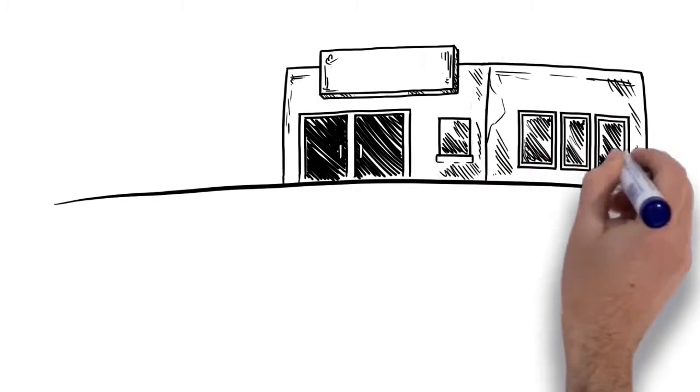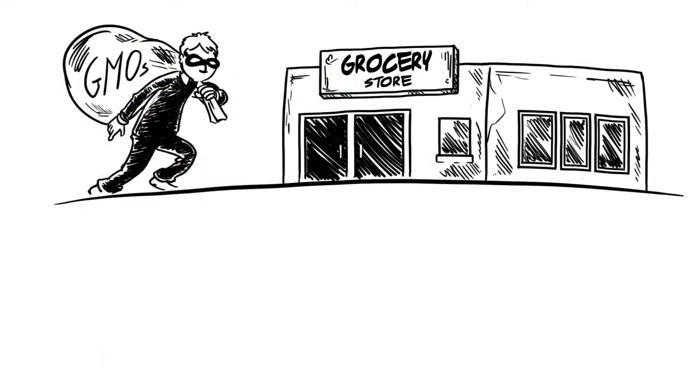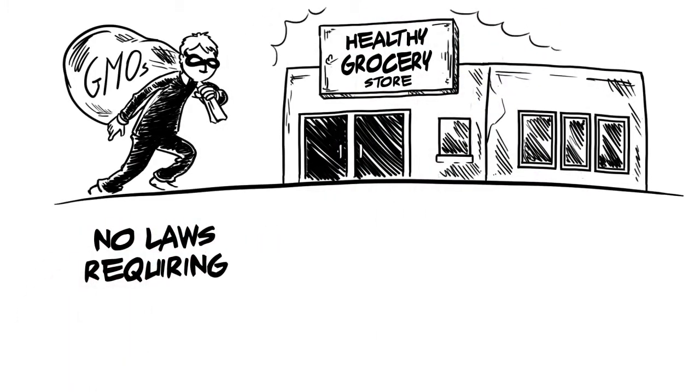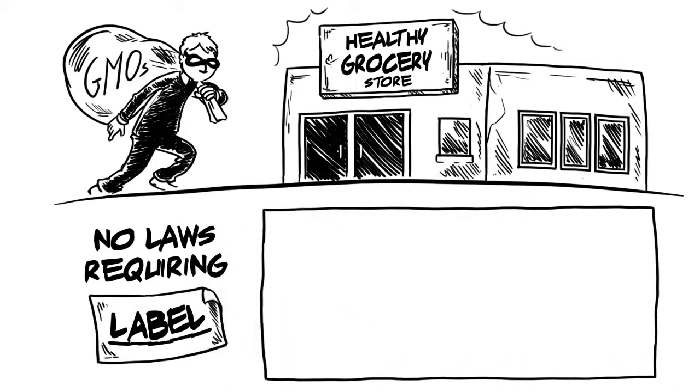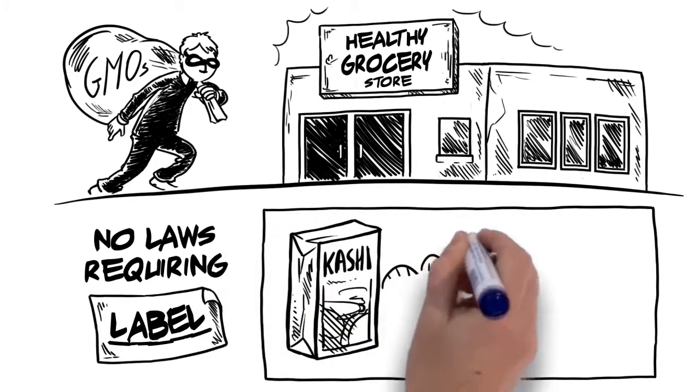The scariest part is genetically modified foods have already infiltrated almost every commercial grocer in the United States, even some of the healthier grocery chains. This is because there are no laws requiring farms, food manufacturers, or grocery stores to label genetically modified foods. There was a huge outrage recently when customers found out natural food manufacturer Kashi had been using genetically modified grains in almost all of their products.